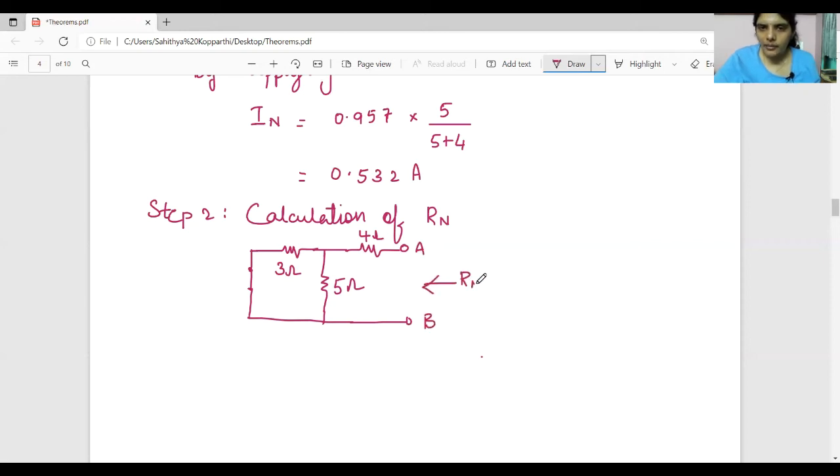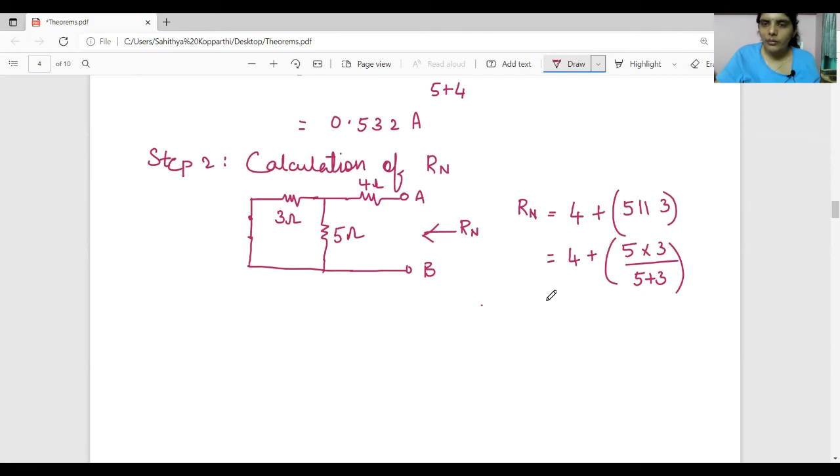So RN is nothing but 3 and 5 are in parallel, so their equivalent resistance is in series with 4 ohm. That is RN. So RN is 4 in series with parallel combination of 3 and 5. So it is 4 plus 5 into 3 divided by 5 plus 3, so we will get 5.875 ohms.